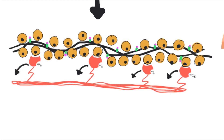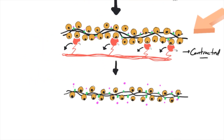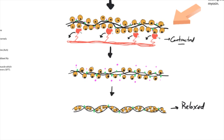Once the contraction is complete, calcium release channels close, and calcium ATPase pumps use ATP to restore the low levels of calcium in the sarcoplasm. By removing calcium from troponin, it allows tropomyosin to slide back into position, blocking the myosin binding site on actin. Therefore, the muscle will ultimately relax.